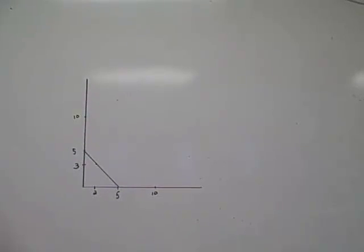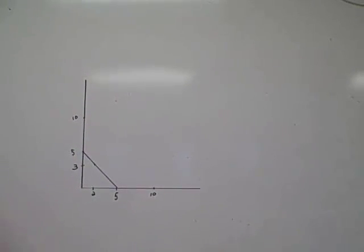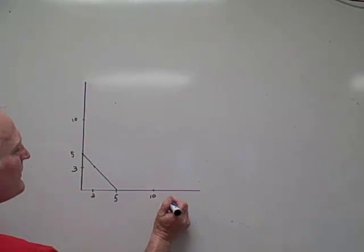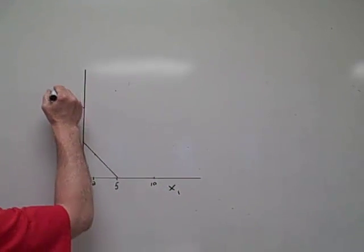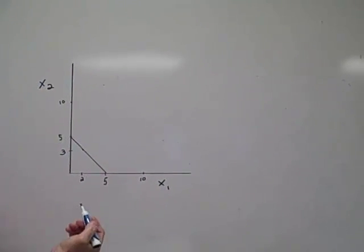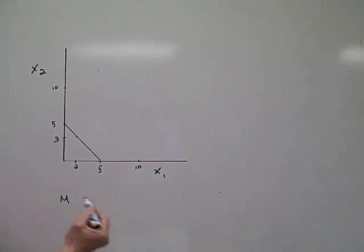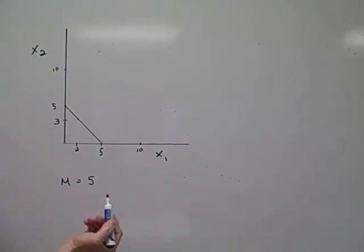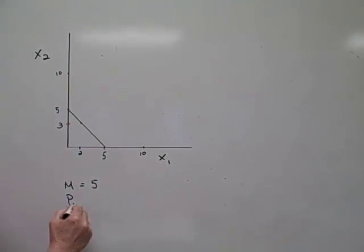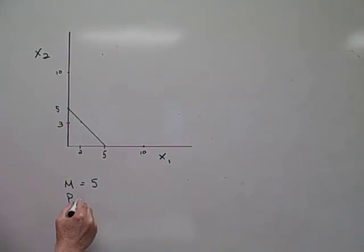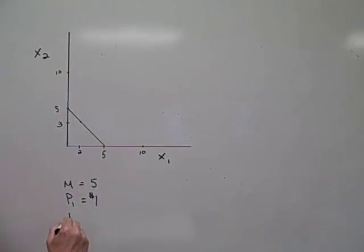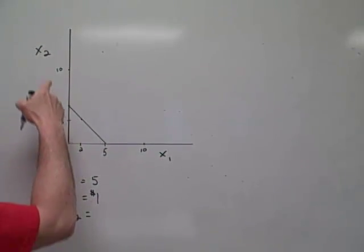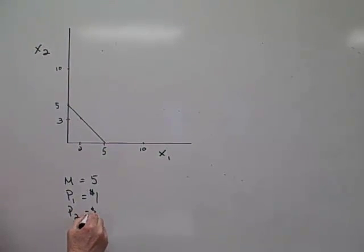So what I've done up here is I've drawn a budget constraint curve that compares X1 to X2. I'm going to assume that the amount of income M is equal to $5, and that the price of good 1, which is X1, equals $1, and the price of good 2 equals $1.